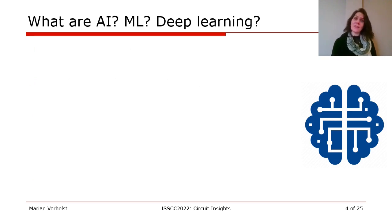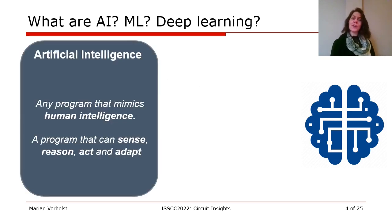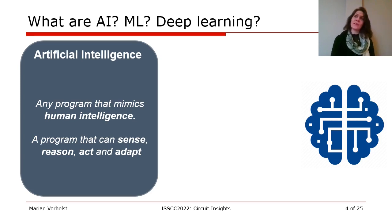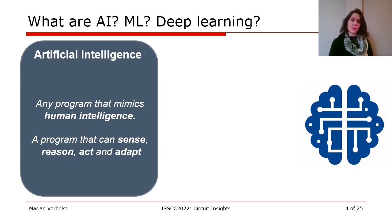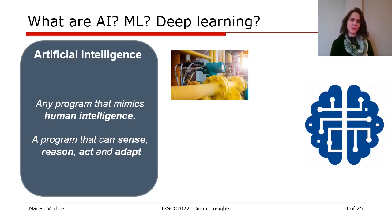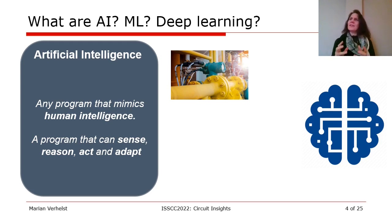Let's start with AI. AI stands for artificial intelligence, meaning any program that mimics human intelligence. More practically, it's typically a program that can sense something, reason about it, and act or adapt upon this. But this is still a very broad container term. For example, a simple PID controller that controls the flow in a pipe is already such an artificially intelligent system.